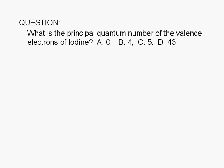What is the principal quantum number of the valence electrons of iodine? A: 0, B: 4, C: 5, or D: 43.